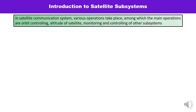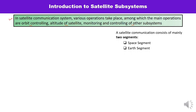During that particular requirement, various things we need to monitor — like whether the satellite is in the correct orbit, what is the height of the satellite, and monitoring and controlling of the other subsystems. So here we are going to talk about the several subsystems which are the most important part.